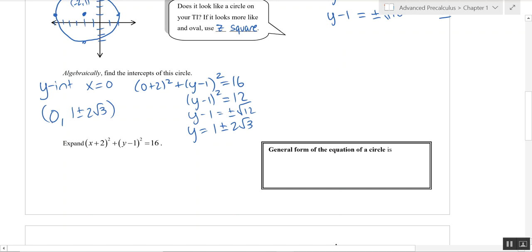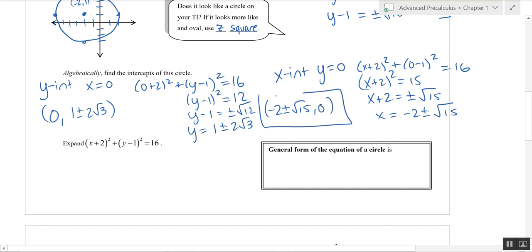Let's find the X-intercepts the same way. And we're going to let Y equal zero. So we'll say X plus two squared plus zero minus one squared is equal to 16. Simplify that a little bit. I'm going to subtract one from both sides. Square root both sides and add a plus or minus. And I wind up getting negative two plus or minus the square root of 15. And let's write that as an ordered pair.